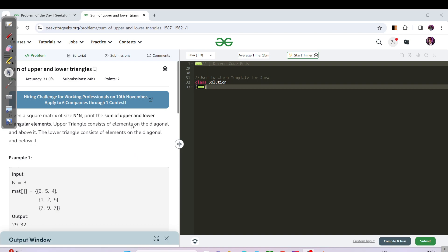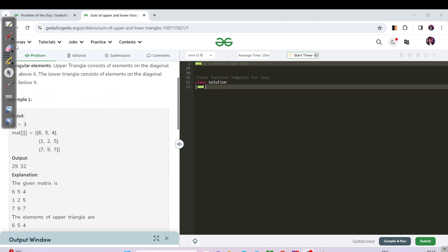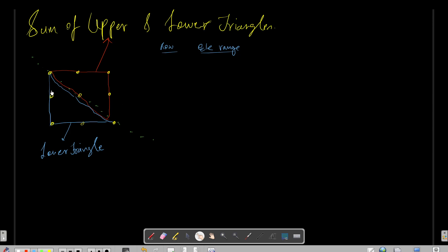So we need to find the sum of the upper and lower triangular elements. Let's say you have this 3x3 matrix. Whatever elements are covered in red boxes, in the red triangle, that is your upper triangle. The elements covered by the blue triangle, that is your lower triangle.